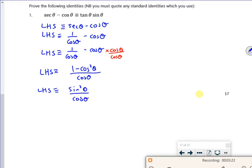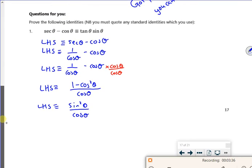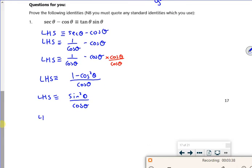But 1 minus cos squared is sin squared. I'm aiming towards sin over cos times sin. I'm aiming towards sin squared over cos. So sometimes I'll look at both sides and almost find the middle ground and know I'm going the right way.